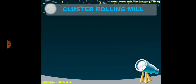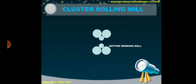The next one is the cluster rolling mill. It consists of 2 small working rollers and 4 large backup rollers, named as bottom working roller, top working roller, bottom backup roller, and top backup roller. In a 4-high rolling mill there is only 1 backup roller per side, while a cluster rolling mill has 2 backup rollers to reduce the movement of the top and bottom working rollers and prevent them from deflecting, keeping their position steady.